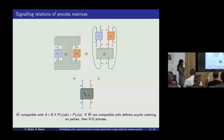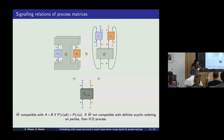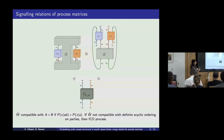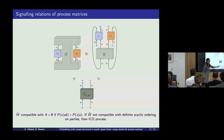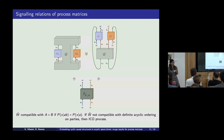In the process framework, we typically say that the process map W is compatible with the causal order Alice before Bob if Bob cannot signal to Alice as verified through this joint probability. If W is not compatible with any definite acyclic ordering on the parties, we call it an indefinite causal order process. Even a probabilistic mixture of causal orders — say Alice before Bob and Bob before Alice in a convex sum — would still be referred to as indefinite causal order. So the classical switch also constitutes, according to this definition, an indefinite causal order.